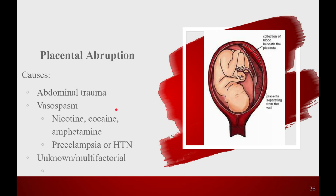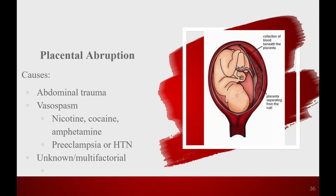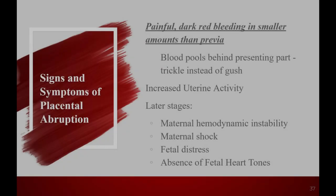Cocaine — when it was prevalent in the early-to-mid 2000s before the opioid crisis — caused a lot of placental abruptions because it really spikes blood pressure and causes exaggerated vasospasm. Amphetamines and crystal meth are the same. People with those substance use disorders have a higher incidence of placental abruption and much higher death rates if they do abrupt. Preeclampsia and chronic hypertension, if they lead to poor placental development and vasospasm, also increase rates of abruption. The rest of the cases are unknown or multifactorial.